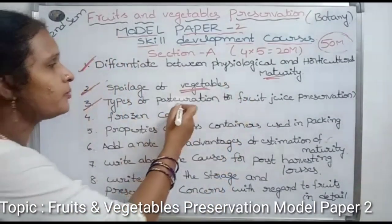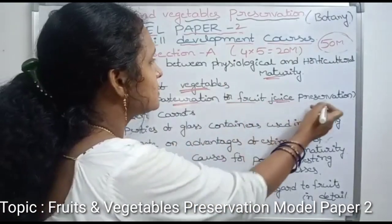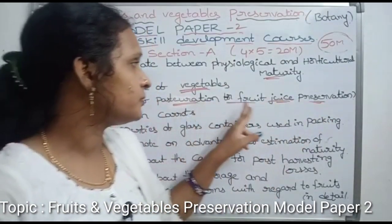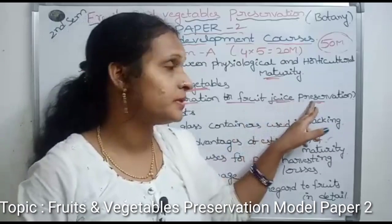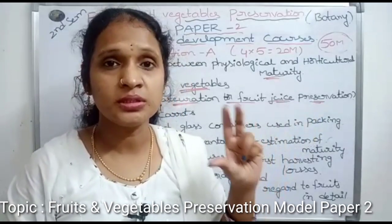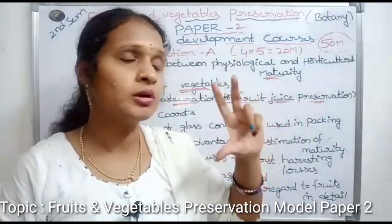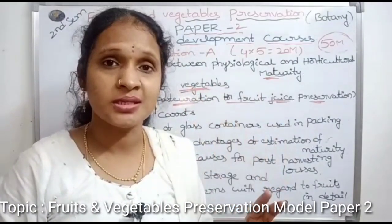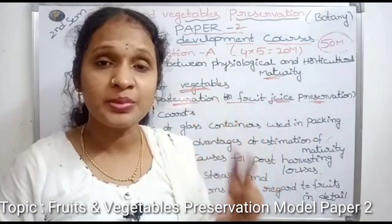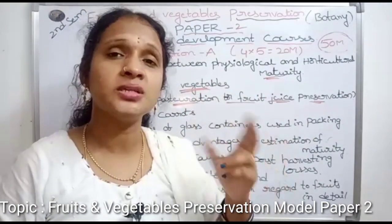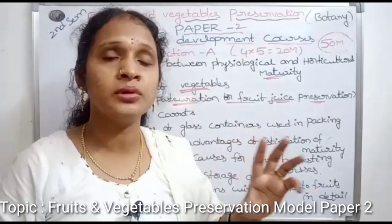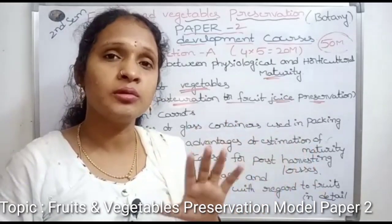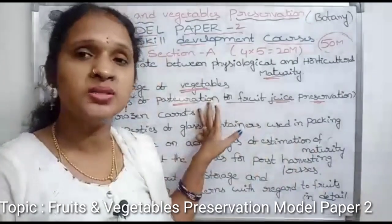Third question: types of pasteurization for fruit juices. We use fruit juices and bottles to distribute the fruit juice. This involves the preservation of bacteria — bacteria is removed through the pasteurization process.